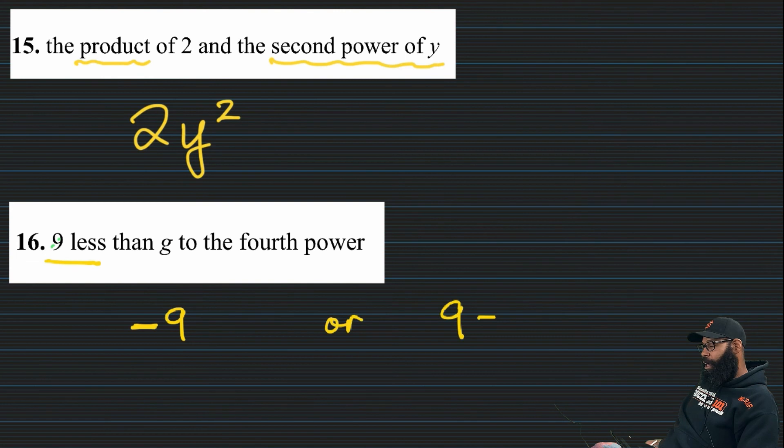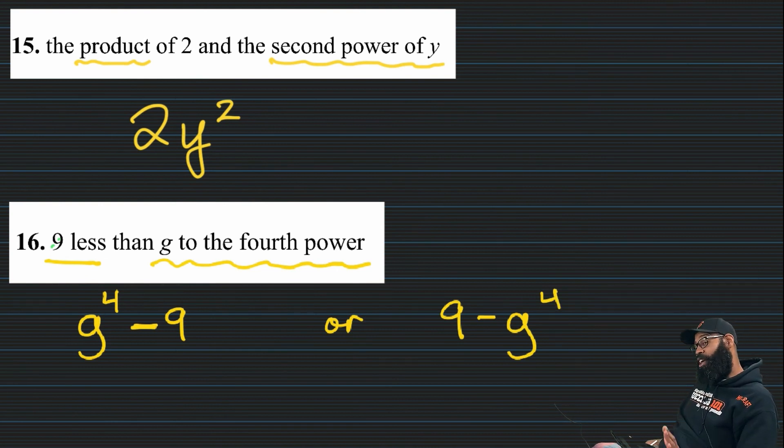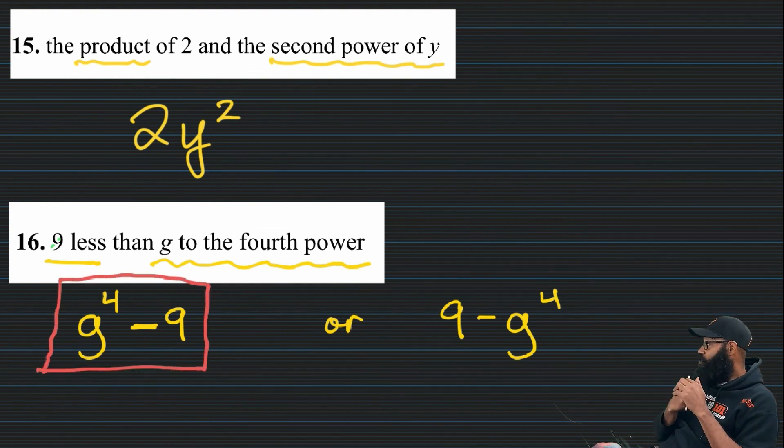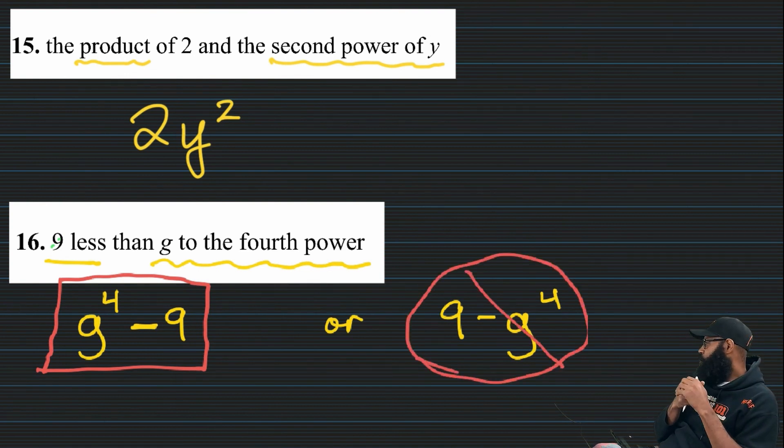And nine less. And this is where again guys, taking your time. You have the option of getting it right or getting it wrong. So are you going to put minus nine or are you going to put minus g to the fourth? There's a big difference. And this is talking about that commutative property of addition. And actually there's a handout coming up later on. I'm sure your teacher will sign it. But the correct answer is g to the fourth minus nine.